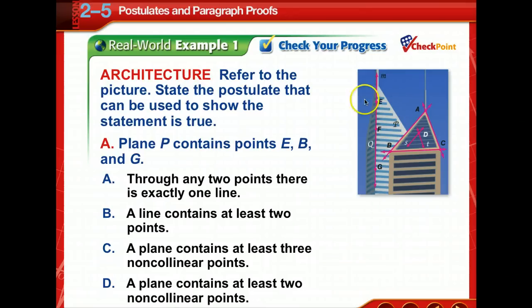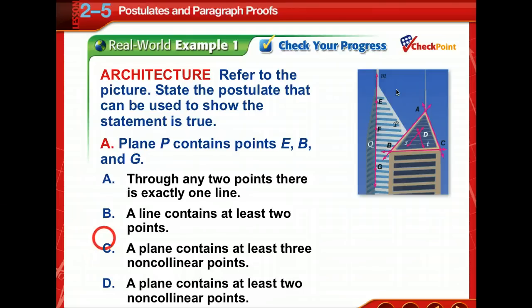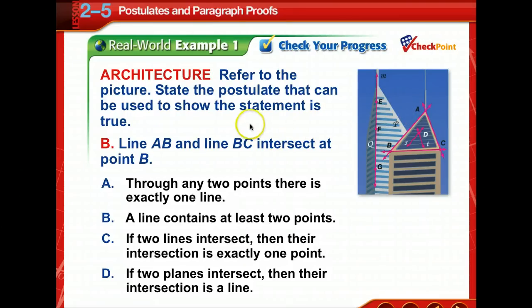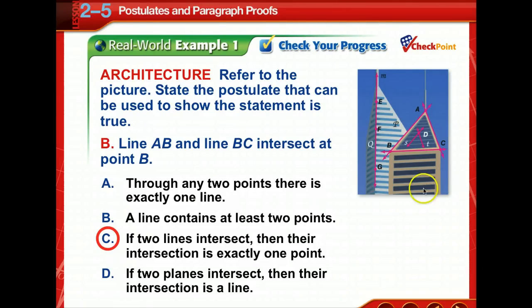Plane P, over here on the blue building, contains points E, B, and G. Here's your check your progress — pause and choose your answer. The answer is C: a plane contains at least three non-collinear points. For the next one, lines AB and BC intersect at point B. If two lines intersect, then their intersection is exactly one point. Lines AB and BC do intersect at exactly one point, point B.